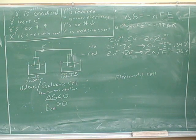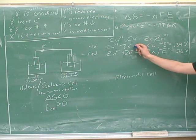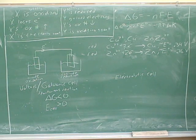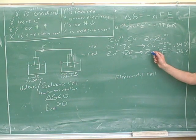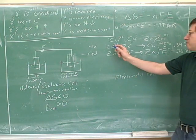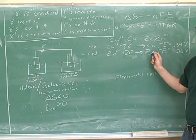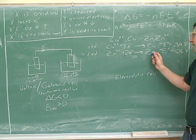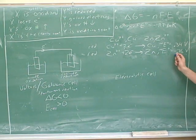So who wants to be reduced more? Copper ions or zinc ions? The copper. Yeah. We just said that the copper wants to be reduced more. Who wants to be oxidized more? Copper metal or zinc metal? Zinc metal. That's just the reverse of the previous case. If this wants to be reduced more, this must want to be oxidized more.